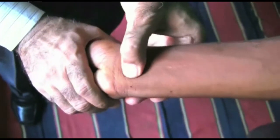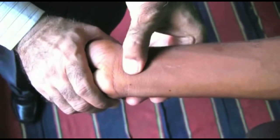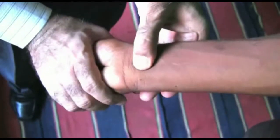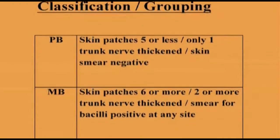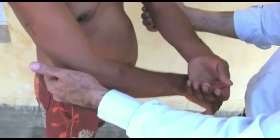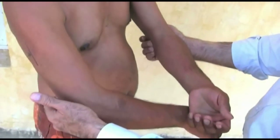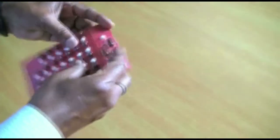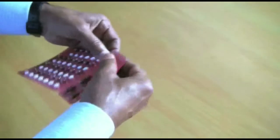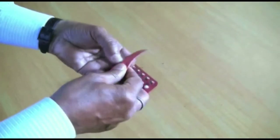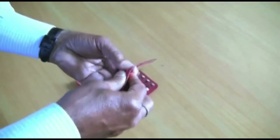If one trunk nerve is thickened with definite loss of sensation in its area, classify the patient as PB. If more than one trunk nerve is thickened, classify the patient as MB. Now it is time for the first supervised pulse dose MDT — but not before checking the expiry date.